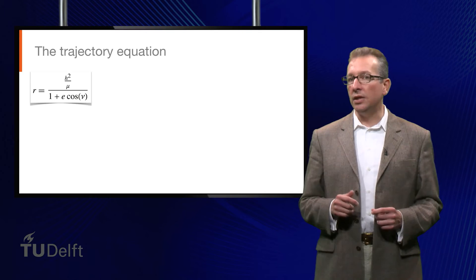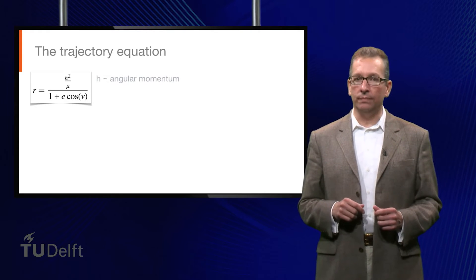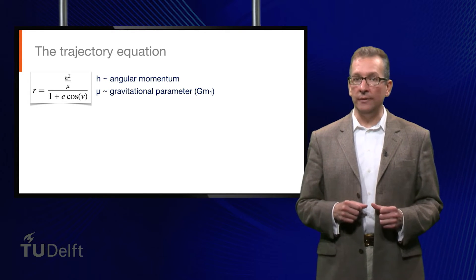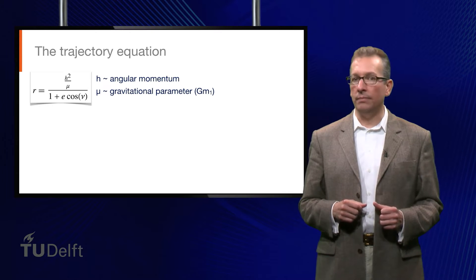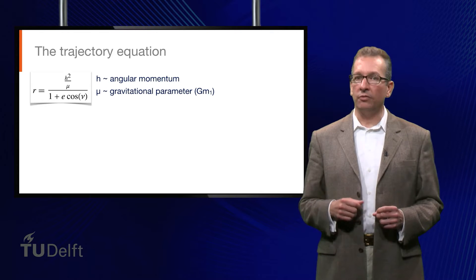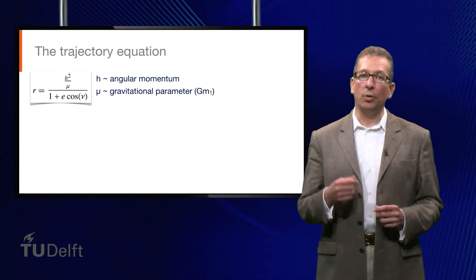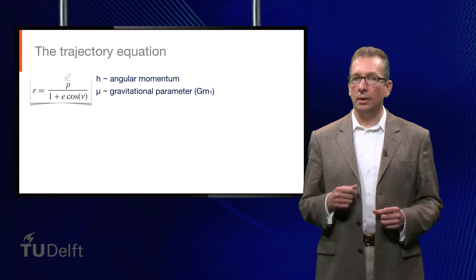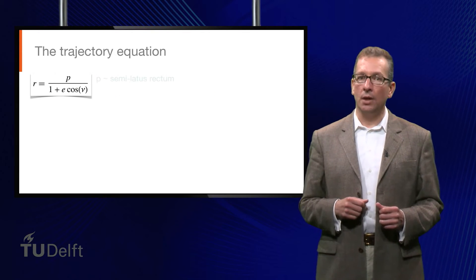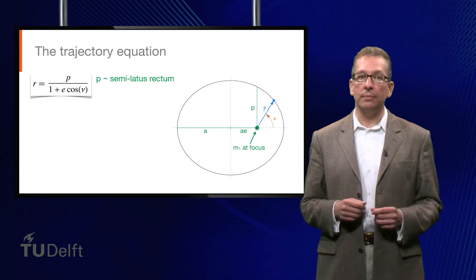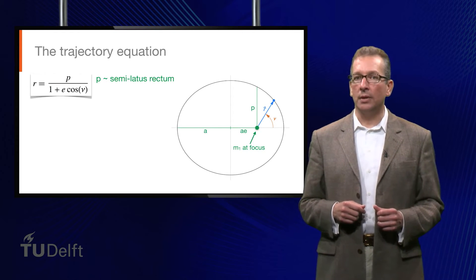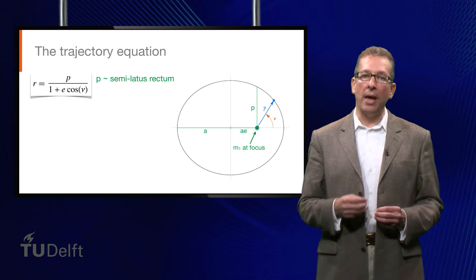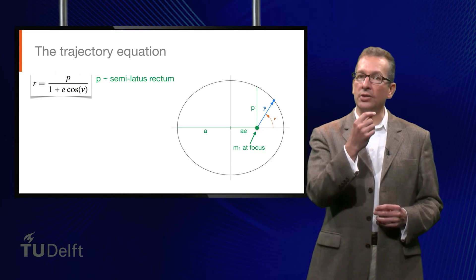In the equation, h is the angular momentum and mu is the gravitational parameter, which is the universal constant g times the mass of the central body m1. In the restricted two-body problem, both h and mu are constant. It's convenient to represent h squared over mu with a letter p, which is called the semilatus rectum, or sometimes just the parameter. The semilatus rectum is perpendicular to the major axis of the ellipse and represents the distance from m1 to the point where it intersects the ellipse.